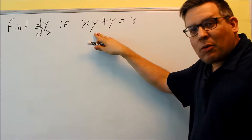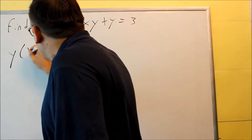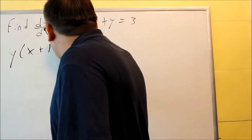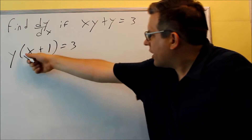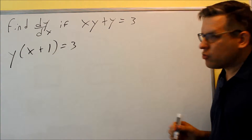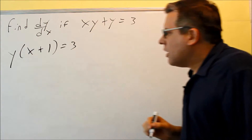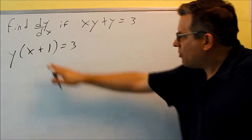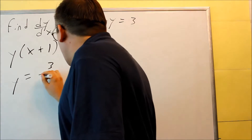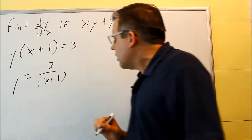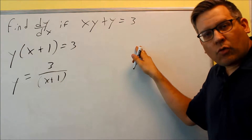There's a common factor of y, so we're going to pull that out first, and that's going to leave us with x plus 1. Factoring out the common factor — there is a 1 here, don't forget about that one. Then to solve for y, divide both sides by x plus 1, and we get y equals 3 over x plus 1.